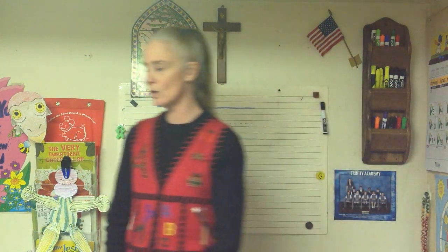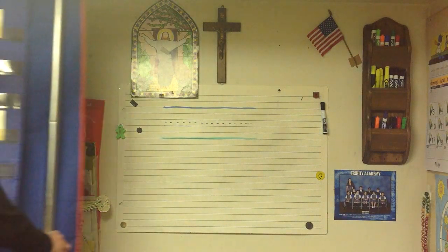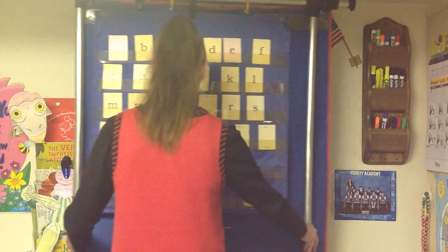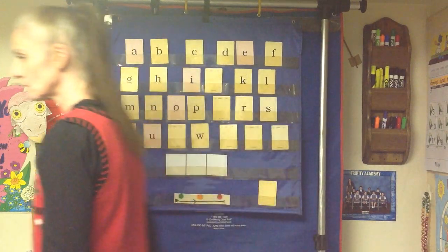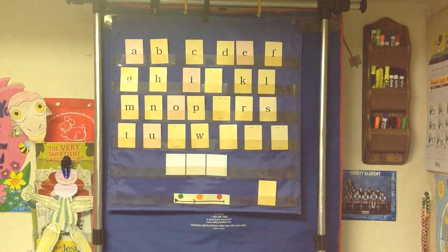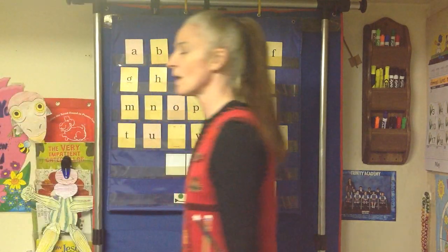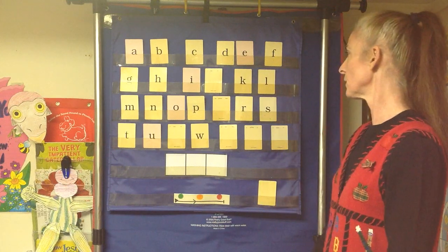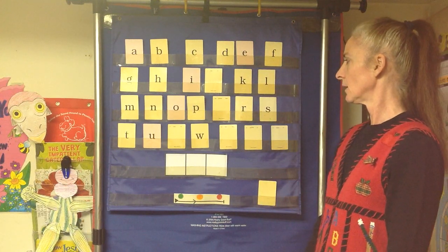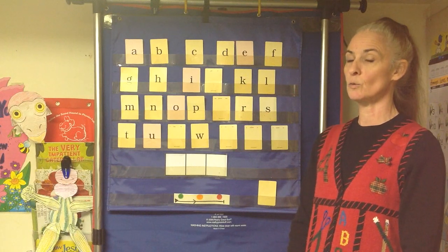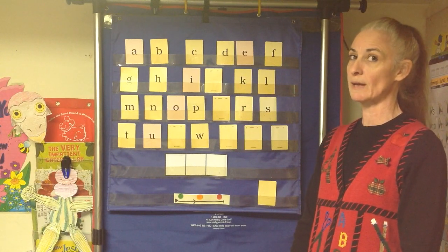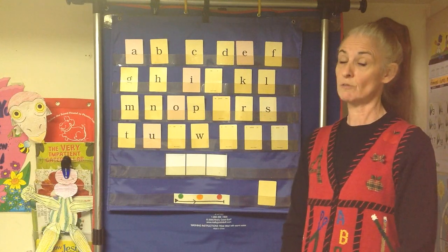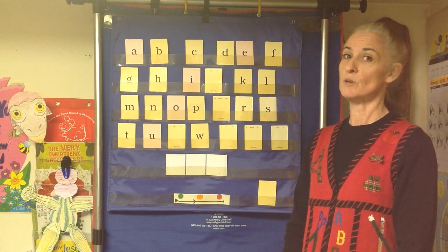Today we're going to do a new consonant letter. I'll bring the chart over so you can guess. When you say the name of this letter, it does tell you the sound it makes. Let's look at the ones we've covered already. This one does give you a clue of the sound it makes when you say its name. It could be J, you're right, because when we say J, we do say 'jah.'